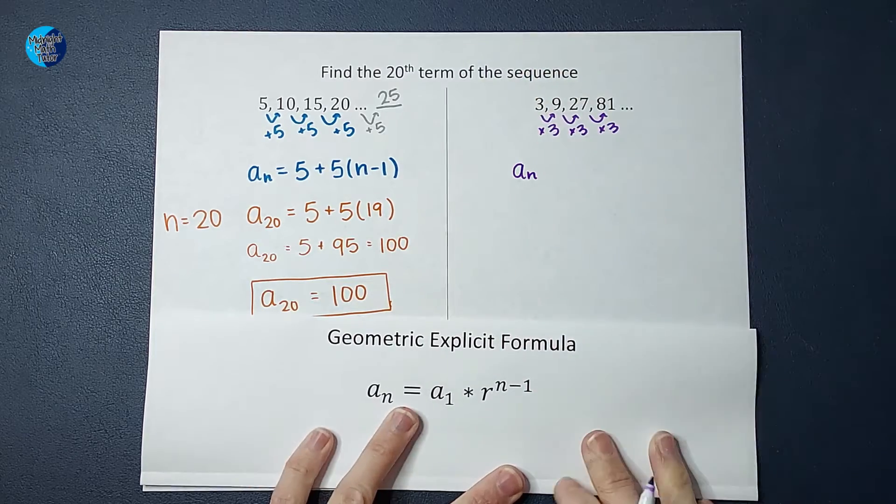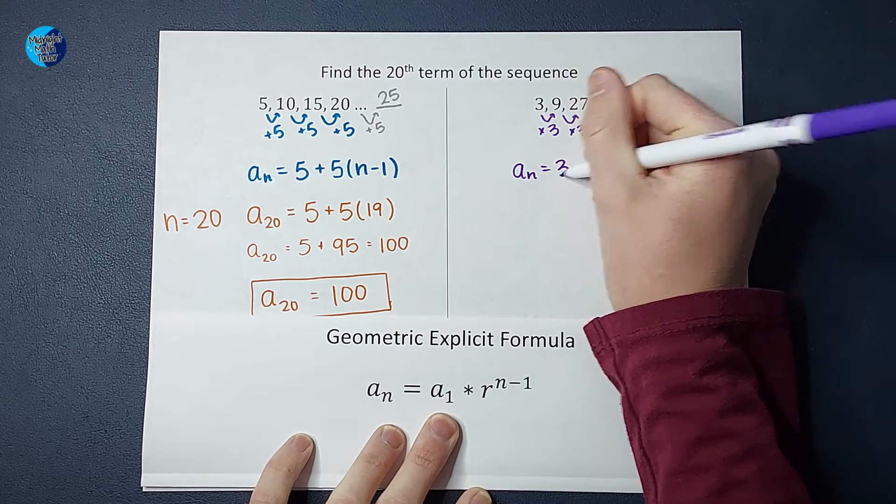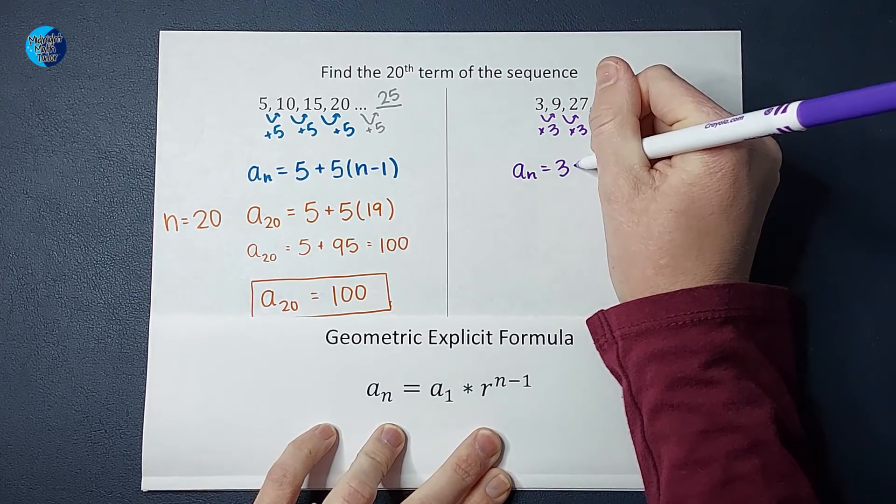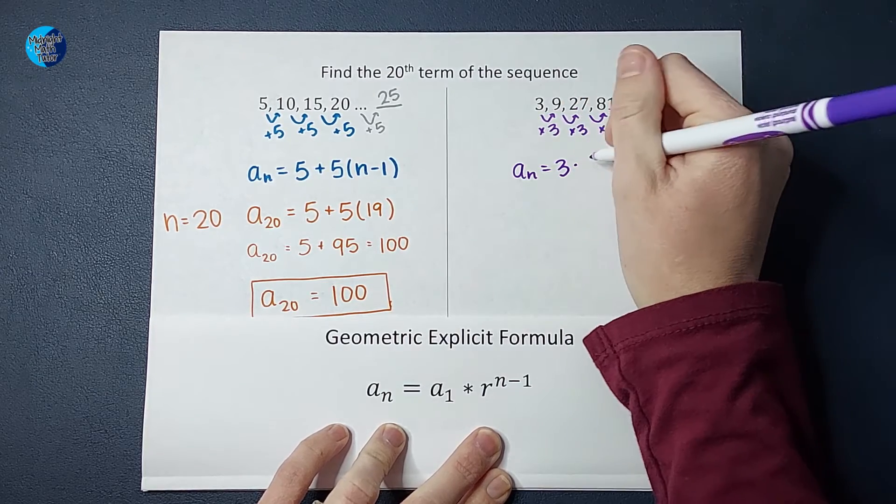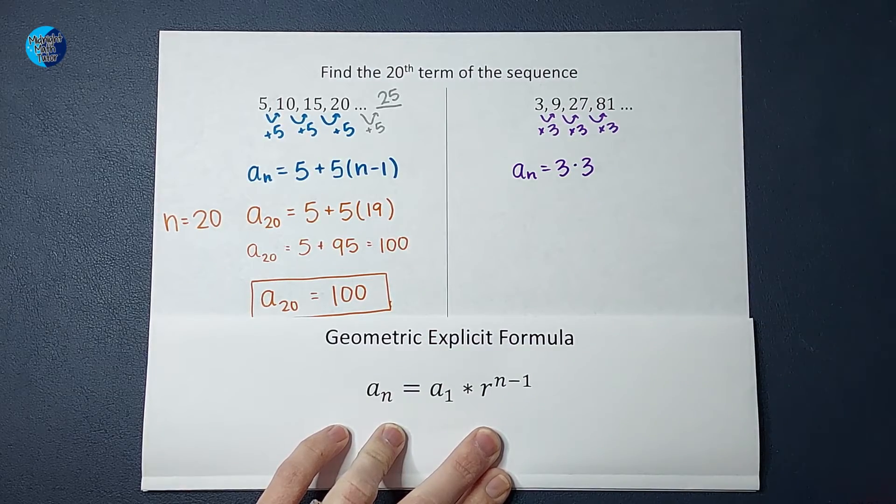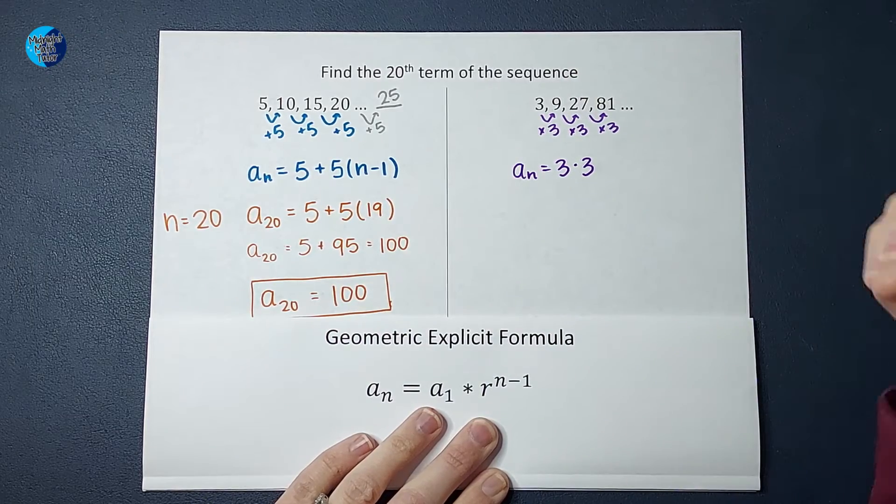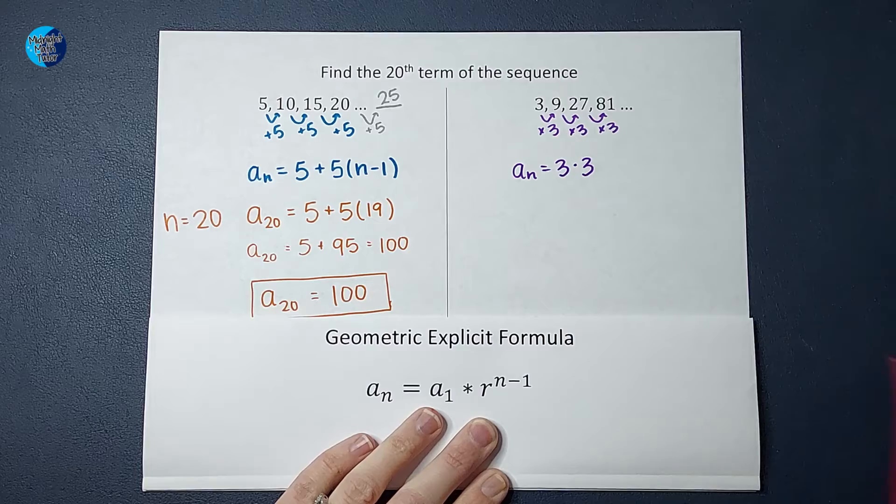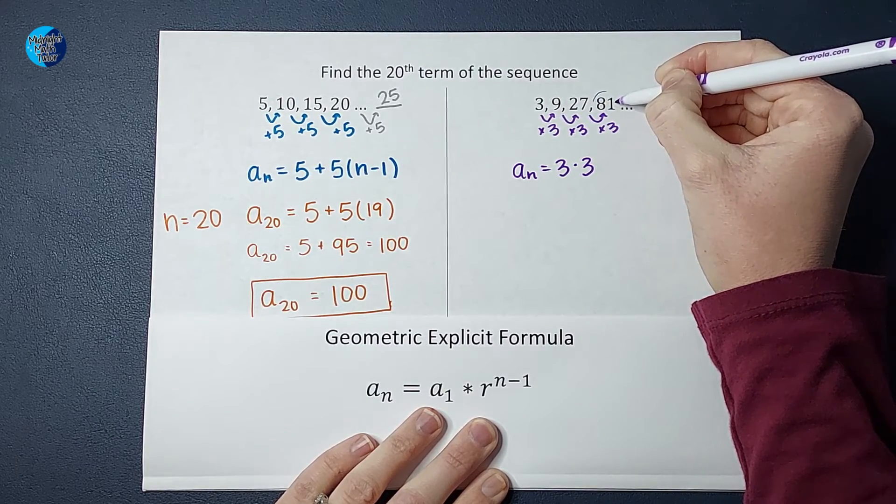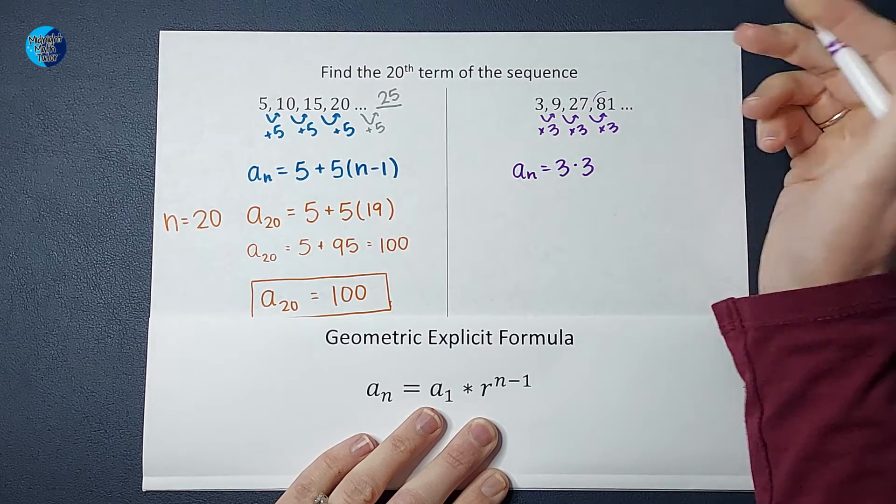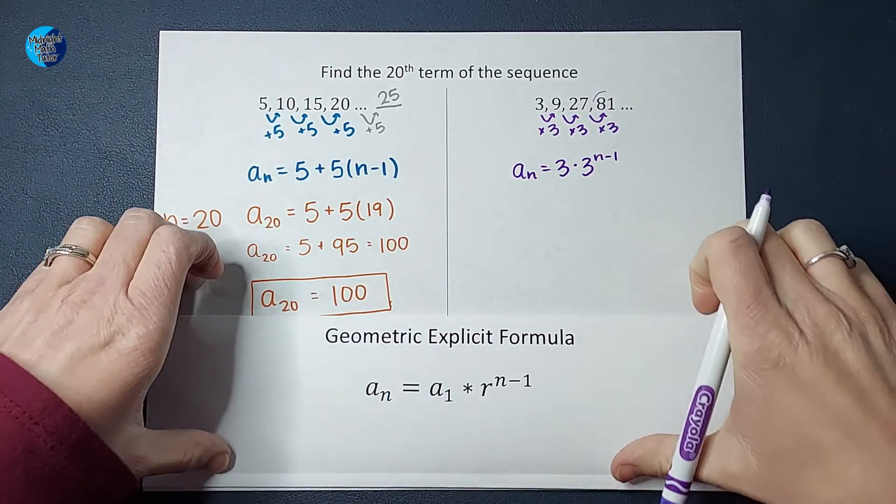So we're looking for the 20th number. So let's figure out what our formula is going to be. A sub n, or whatever number you want to find, is equal to the first number in your sequence, a sub one, times the common ratio, or basically what is the pattern? What's changing each time? We're multiplying by three. But how many times? Very similar over here, one less time than whatever number you want to find. This is the fourth number in my sequence, and how many times did we multiply by three to get there? Three times. So that is where the n minus one comes into play. So that's my formula.